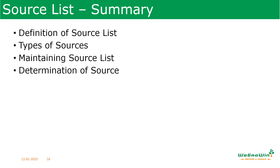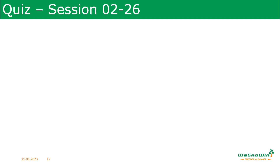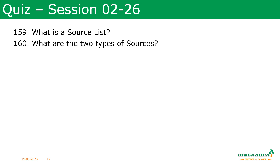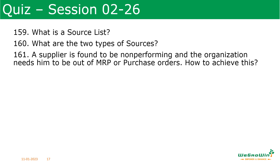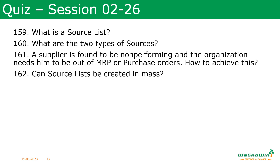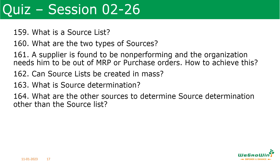In this session we discussed the definition of the source list, the types of sources, how to maintain the source list, and how to determine the source. Quiz questions for this session: What is the source list? What are the two types of sources? A supplier is found to be non-performing and the organization needs to remove them from MRP or purchase data — how to achieve this? Can the source list be maintained in mass? What is source determination? What are the other sources used in source determination other than the source list?